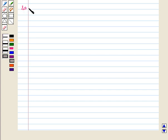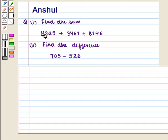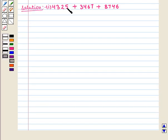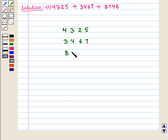Let us start with the solution of the given question. In the first part of the question, we have to find the sum. So first we write the number 4,325, then the second number 3,467, then the third number 8,746, one below the other, lining up the digits at the unit place.